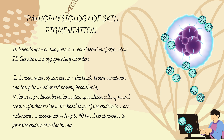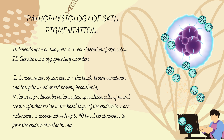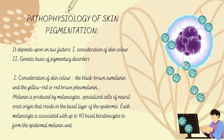Melanin is produced by melanocytes — specialized cells of neural crest origin that reside in the basal layer of the epidermis. The biosynthesis of melanin occurs in lysosome-like organelles called melanosomes, which are transported and transferred to surrounding keratinocytes. Each melanocyte is associated with up to 40 basal keratinocytes to form an epidermal melanin unit. One melanocyte transfers melanosomes to surrounding 36 keratinocytes.